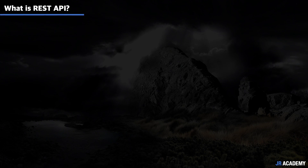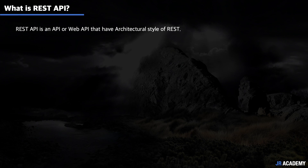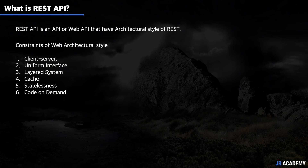This leads us to our next question: what is a REST API? A REST API is an API or web API that has the architectural style of REST. In the previous tutorial, we saw that Roy Fielding gave six constraints of web architectural style to reduce scalability problems. Those constraints were: client-server, uniform interface, layered system, cache, statelessness, and code on demand. An API that fulfills all six of these constraints — where code on demand is not mandatory — can be considered a REST API. A web API can follow any web architectural style, so there are multiple different kinds of APIs, but only the API that follows these six constraints is considered a REST API.